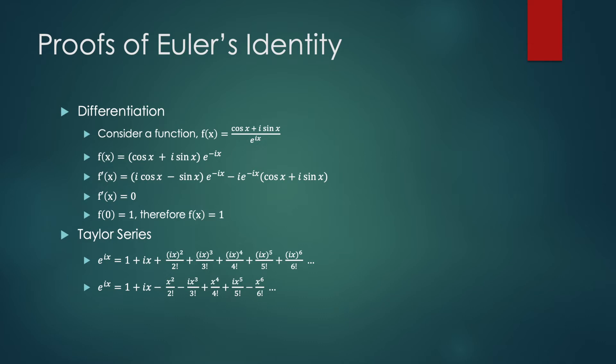If we separate the terms with an i from the terms without an i, we can create two separate series. The first series now you see is actually the Taylor series of cosine, and the second series is the Taylor series of sine. So we've proven that e to the IX equals cos X plus i sin X.